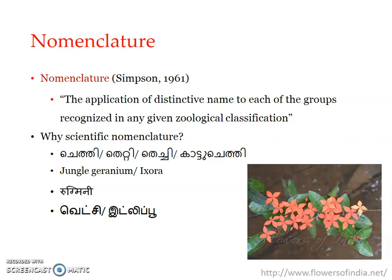Moving on to the next basic concept: nomenclature. Simply, nomenclature means naming — to call an object by a name. As Simpson puts it, it is providing a distinctive name to each of the groups recognized in any given zoological classification. A scientific system of naming the taxonomic groups or taxa recognized in zoological classification is nomenclature. For example, naming Panthera as a genus — that is nomenclature.